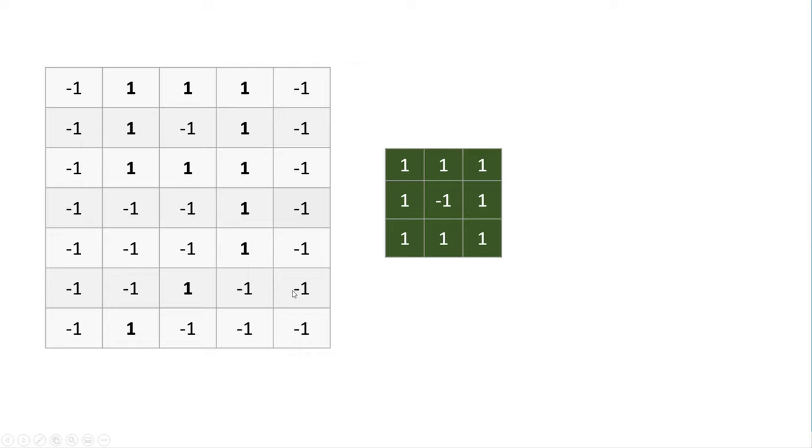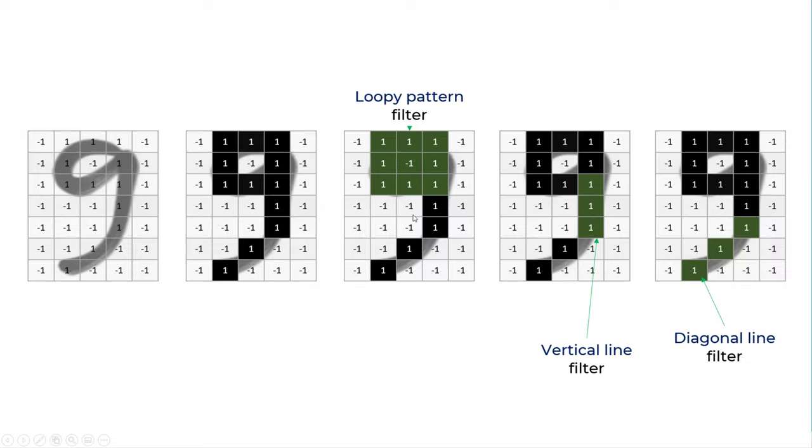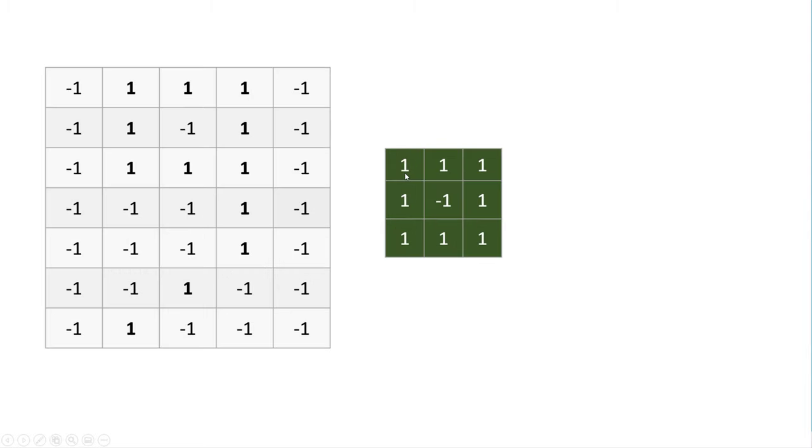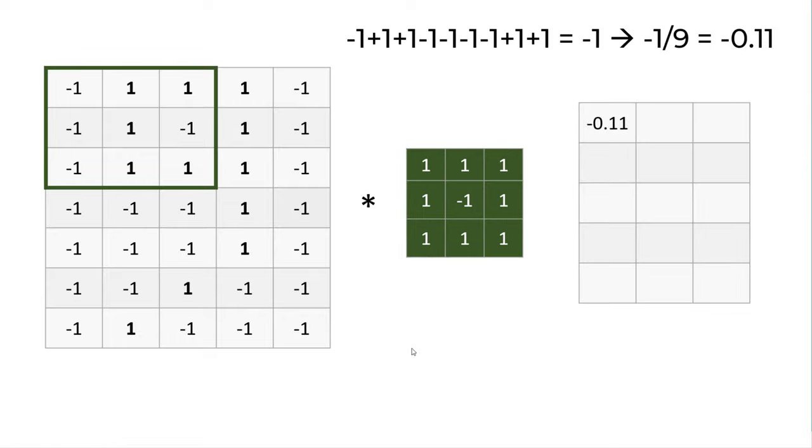So we take our original image and we will apply a convolution operation or a filter operation. So here I have a loopy circle pattern or a head filter. The way convolution operation works is you take three by three grid from your original image and multiply individual numbers with this filter. So this minus one is multiplied with this one. This one is multiplied with this one and so on. In the end, you get a result.